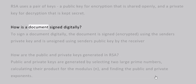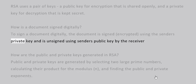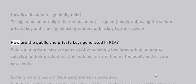How does a document get signed digitally? To sign a document digitally, the document is encrypted using the sender's private key, and is decrypted using the sender's public key by the receiver.